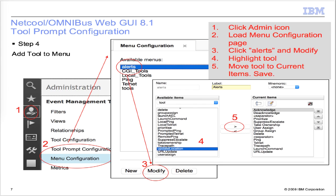After creating the WebGUI tool, we need to add the tool to the menus using the Menu Configuration. Click the admin icon and then Menu Configuration. Click Alerts and then Modify. Highlight the tool and use the greater-than arrow to move the tool to the current items box, then save the menu.